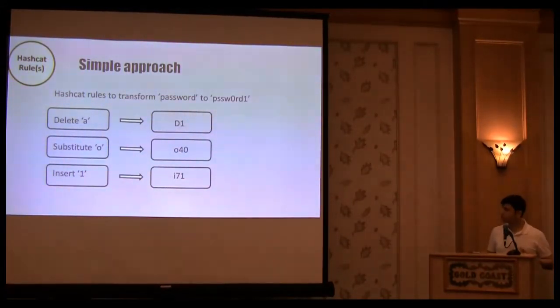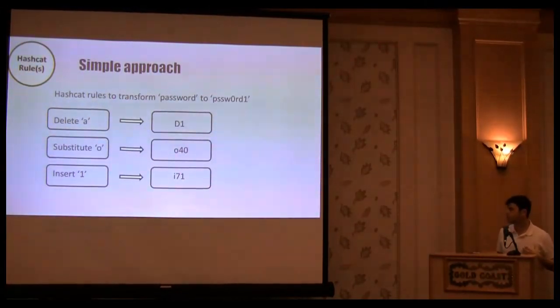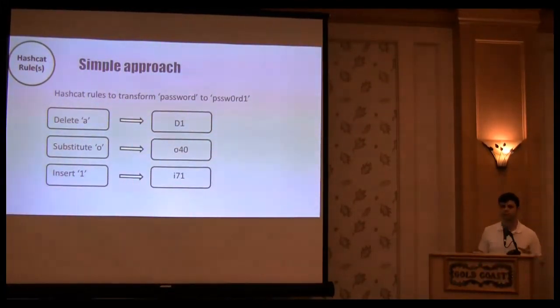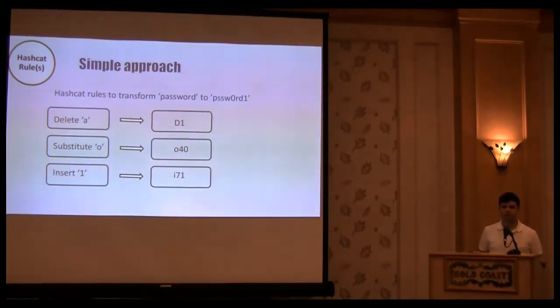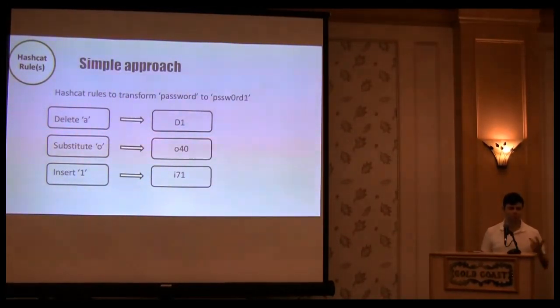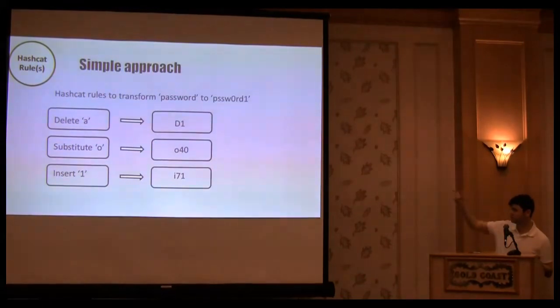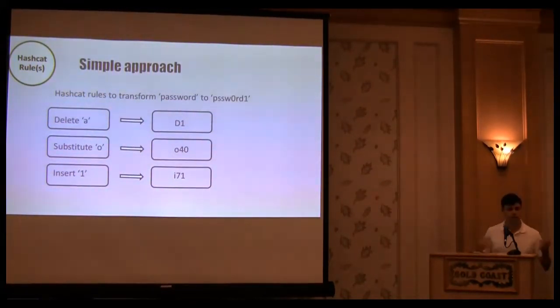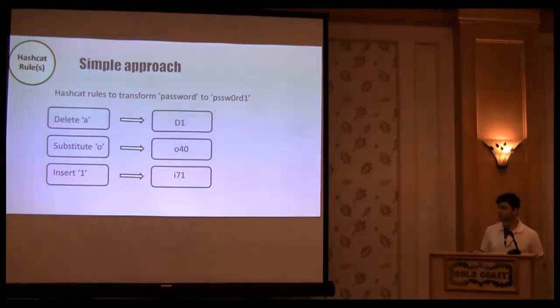Now that you have a collection of these Hashcat rules, what you can do is, you can convert them into the most simple operations possible. Basically all we have is insertion, deletion, substitution. The most primitive Hashcat rules that you can generate is the D, which shows just an index of what you want to delete all. Again, index-based replacement, and I, insertion.